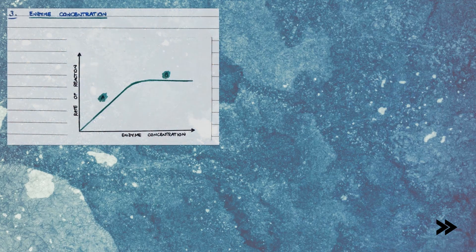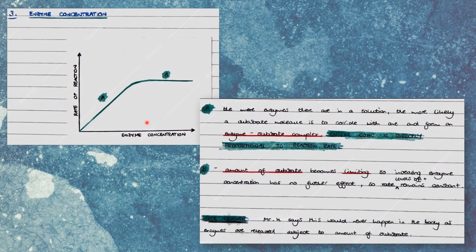Next, we have enzyme concentration. The more enzymes there are in a solution, the more likely a substrate molecule is to collide with one to form an enzyme-substrate complex, so at first, enzyme concentration is directly proportional to the rate of reaction. However, the amount of substrate becomes limiting, so increasing the enzyme concentration has no further effect, and the rate levels off and remains constant. Note, however, that in real life this would never happen in the body, as enzymes are released subject to the concentration of substrate.